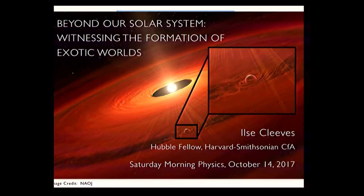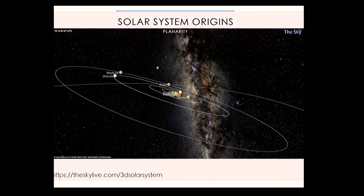To give a background of where we were 10 years ago: most of our information about planet formation, which we extended to exoplanet formation, came from our solar system. We have a lot of data — no surprise, we're here.